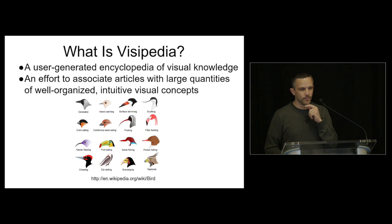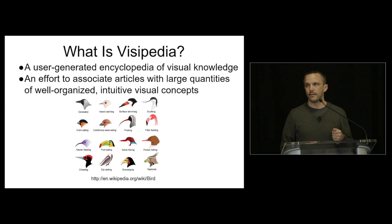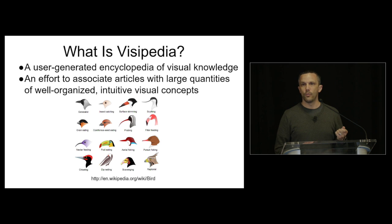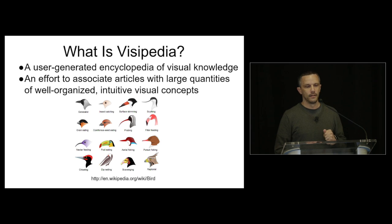The Visipedia project is the theme that runs through this research. The idea is that right now we take for granted the ability to do text searches — you can think of pretty much any topic, do a web search, and find all kinds of interesting information, often on Wikipedia. But if you don't know what something is called — you just have a picture of a mushroom, a disease on a plant, or a bird — and you don't know the technical terms, how do you find that answer?